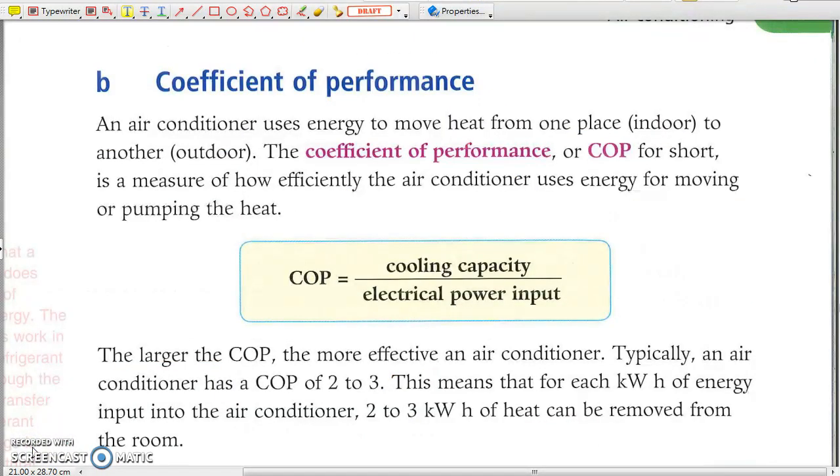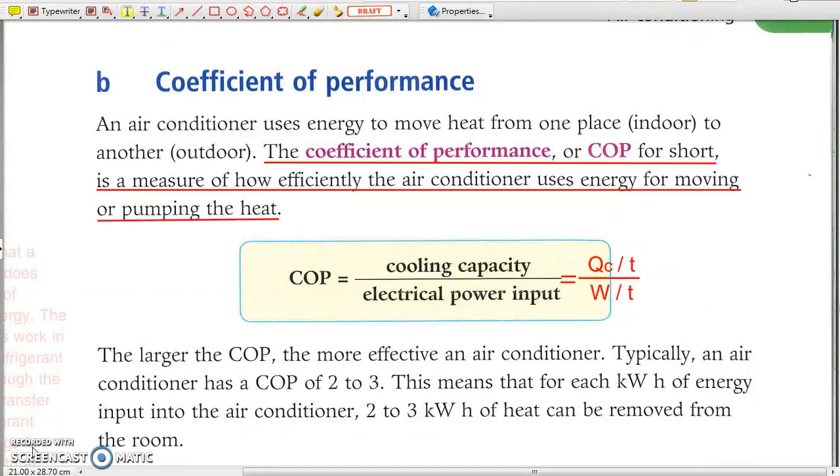Coefficient of performance. It is the ratio of heat energy removed per unit electrical energy consumed. Typically, an air conditioner has a COP of 2 to 3. This means that for each kilowatt hour of energy input into the air conditioner, 2 to 3 kilowatt hour of heat can be removed from the room.